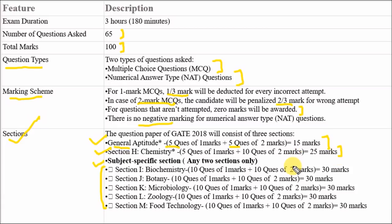In the subject-specific section, you have to opt for only 2 sections. I would suggest you please select biochemistry as one section, because many of the topics of biochemistry are common with zoology, botany, and food technology. So please select biochemistry as one of your sections.